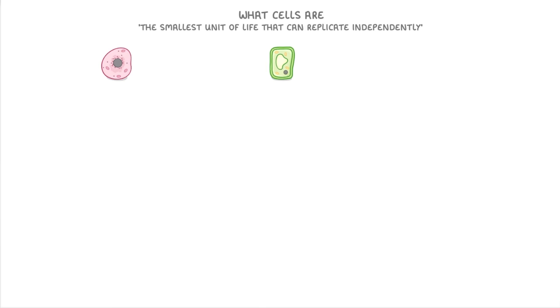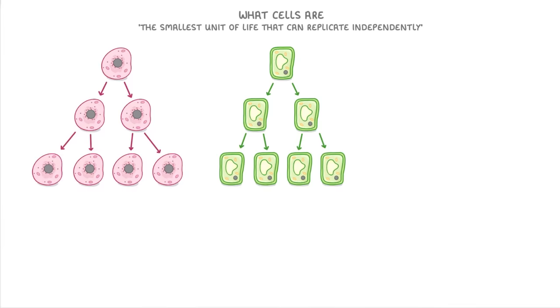So if we took an animal or a plant cell, they could divide into two cells, then into four cells, and so on.